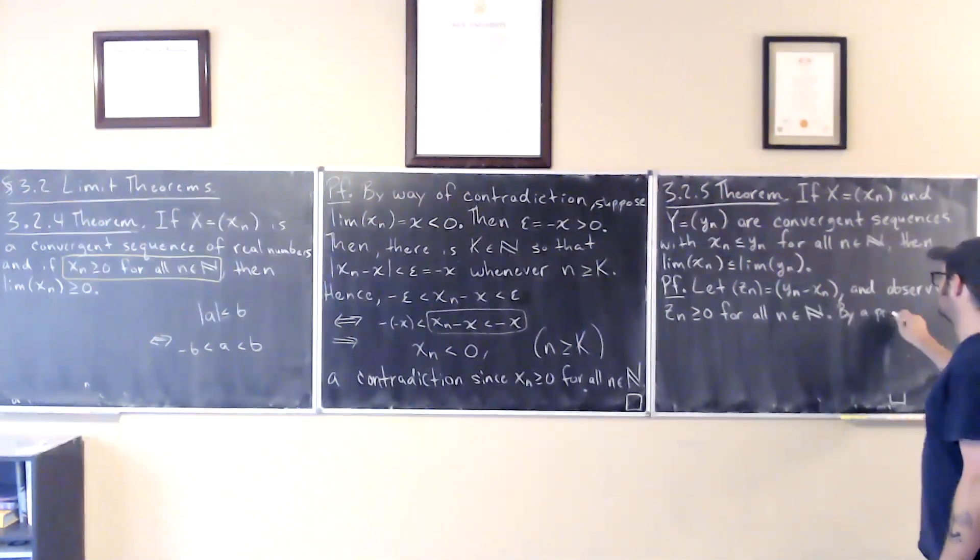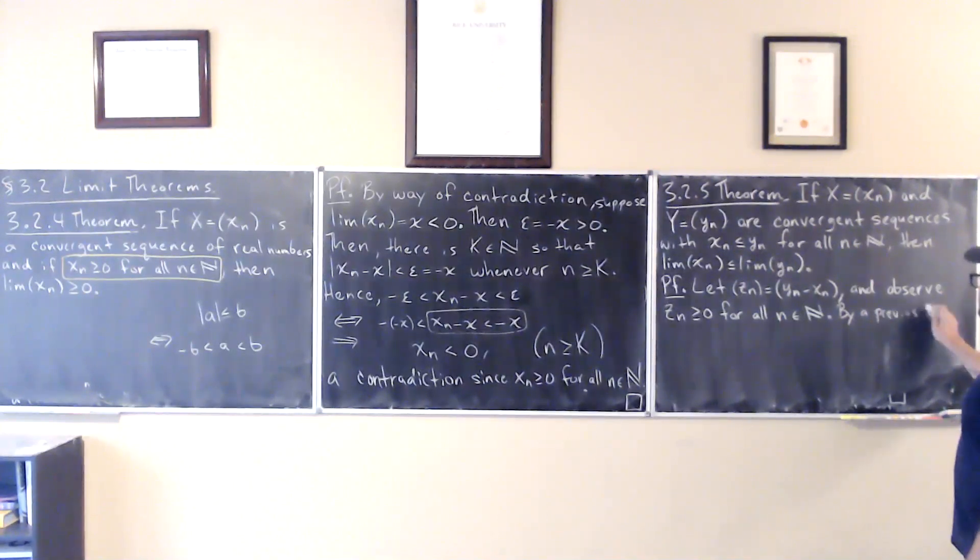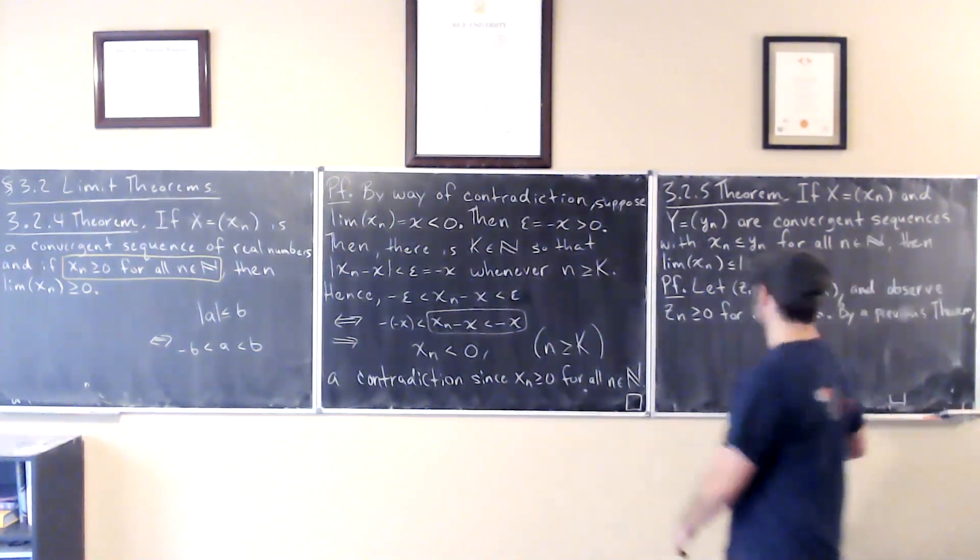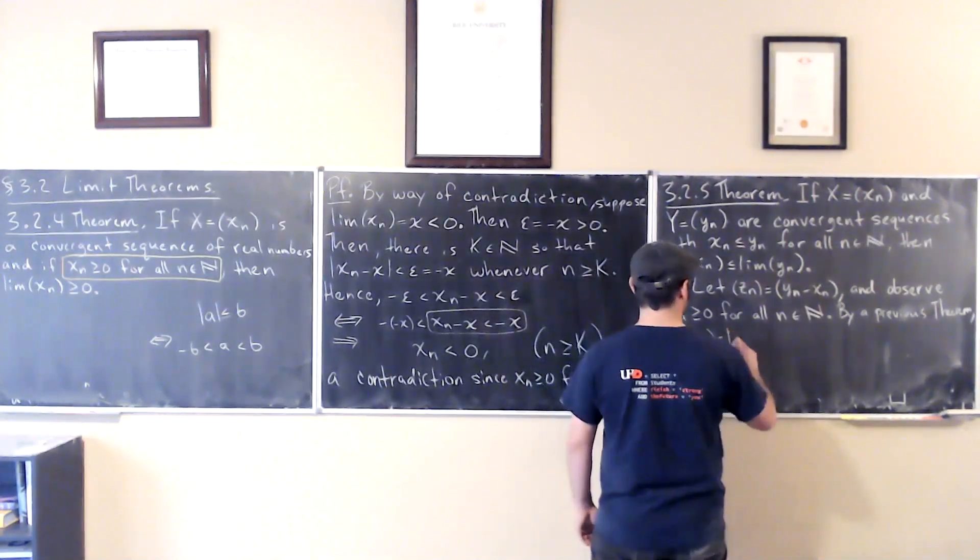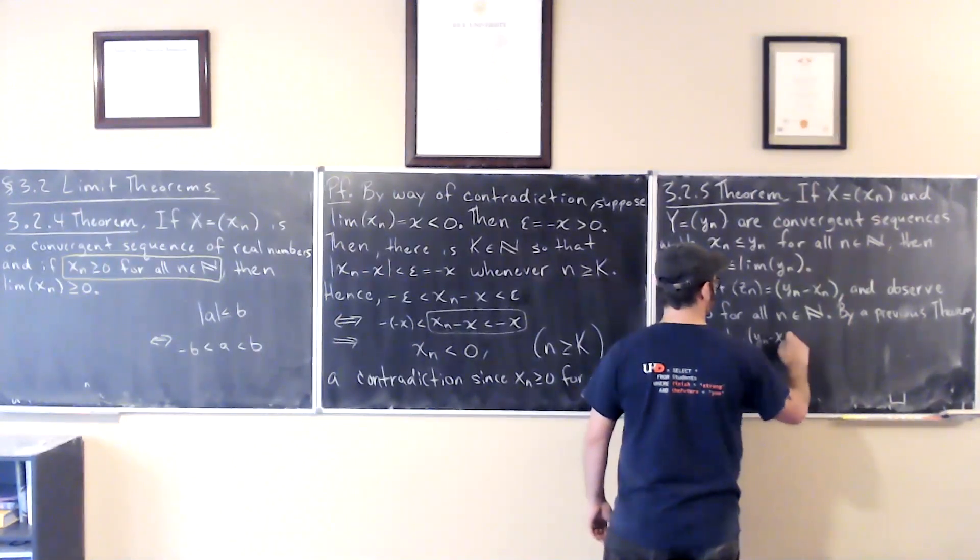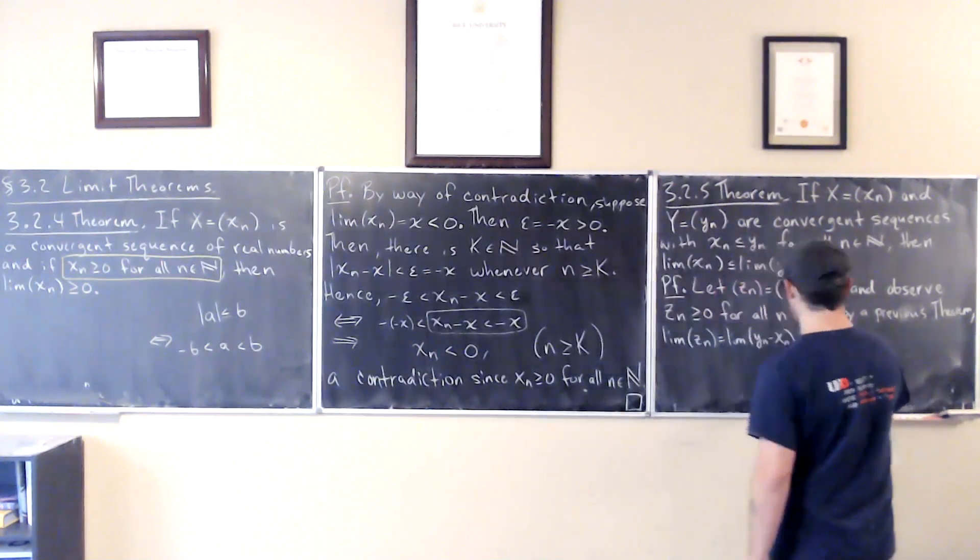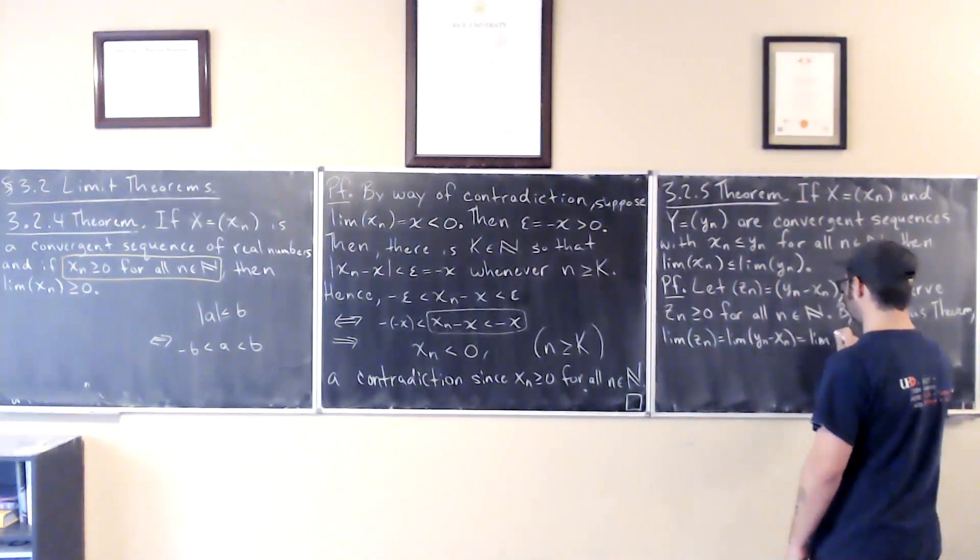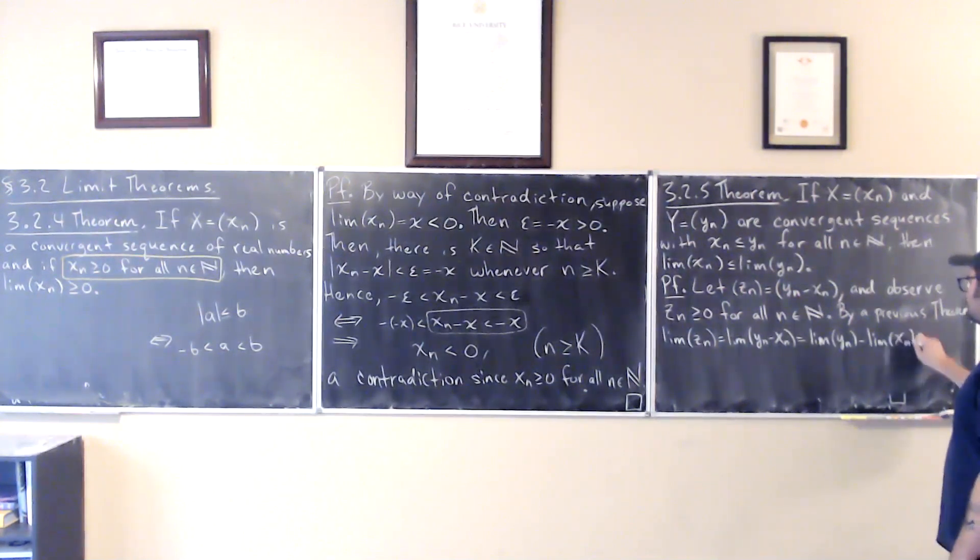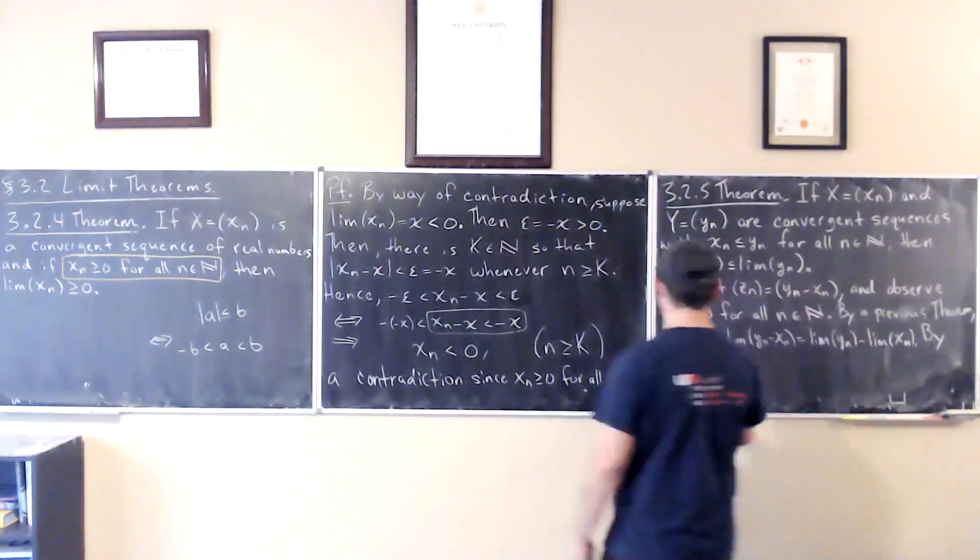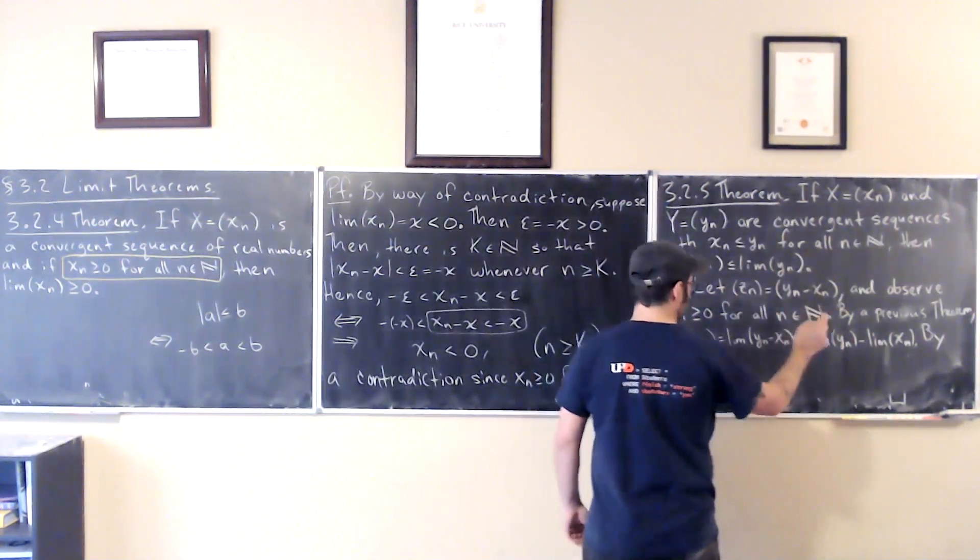So by a previous theorem, the limit of z_n equals the limit of y_n minus x_n equals the limit of y_n minus the limit of x_n. So then by 3.2.4, that's greater than or equal to zero.